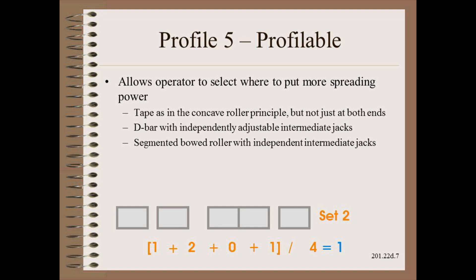Unfortunately, or perhaps fortunately, profilable spreaders are extremely rare. Perhaps the most common is taping a roller in selective locations instead of at both ends as in the concave roller.